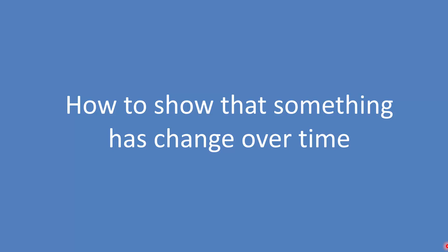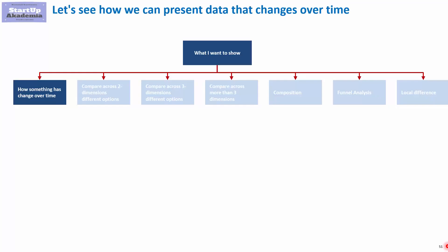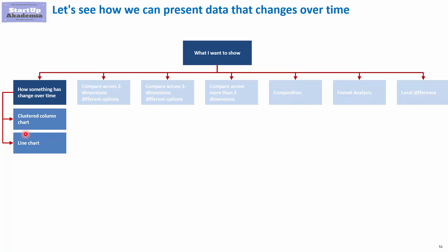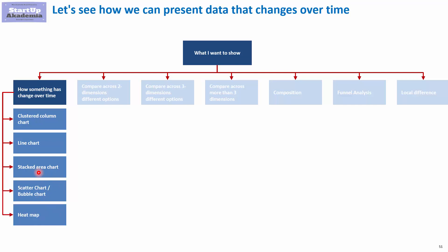Let's have a look at how we can show that something has changed over time. For this, we use the following options. First of all, clustered column chart is your first choice — the most often used one in consulting. Quite often you'll also be using line charts. Another alternative is the stacked area chart, scatter chart or bubble chart, heat map, and finally the 100% stacked column chart. I'm going to show you examples of how those charts look like, using the very same set of data.